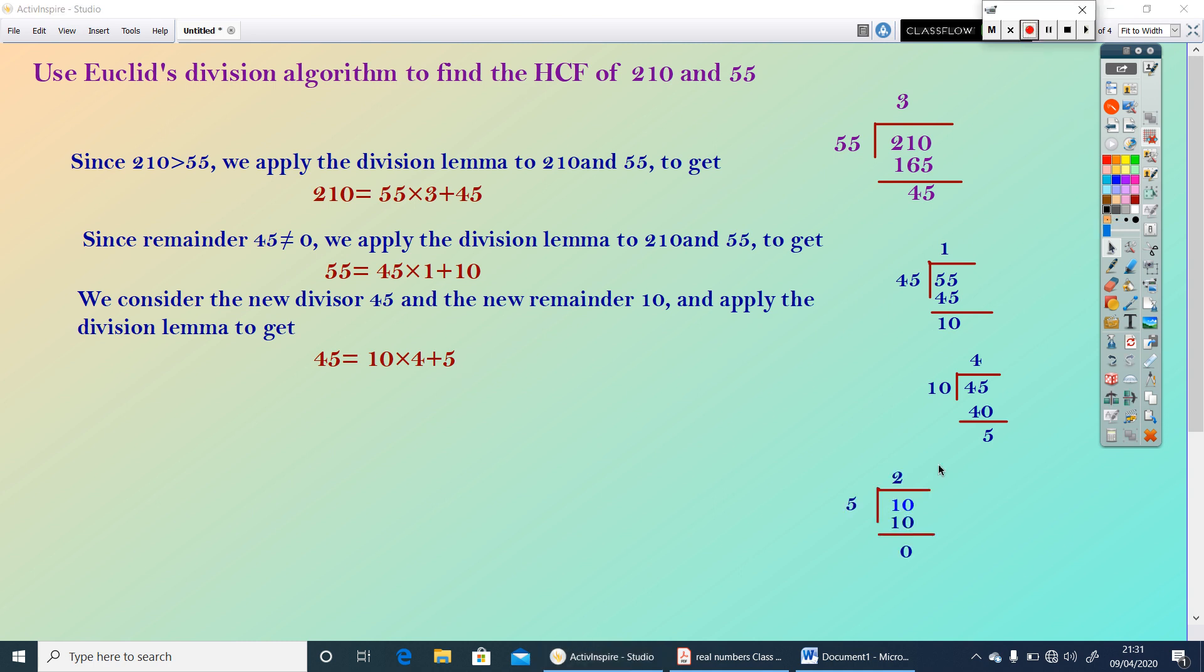45, we can write it as 45=10×4+5. Again, we are getting a new divisor and new remainder 5. Let us apply division lemma to 10 and 5. When we divide 10 by 5, we will get quotient as 2 and remainder 0. We consider the new divisor 10 and new remainder 5 and apply division lemma to get 10=5×2+0. When the remainder becomes 0, the divisor is 5. So, we can call it as HCF of 210 and 55, which is 5, the divisor.